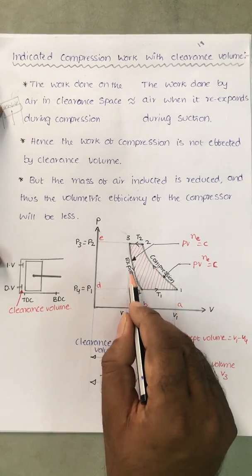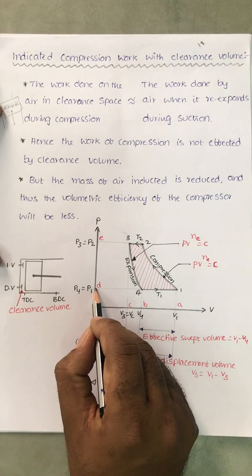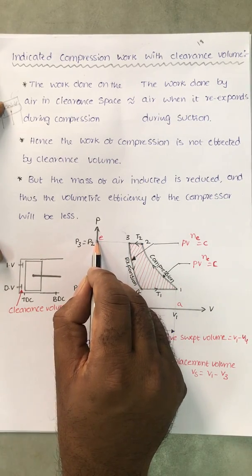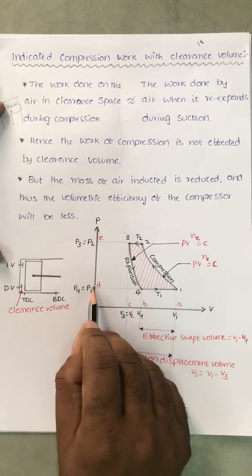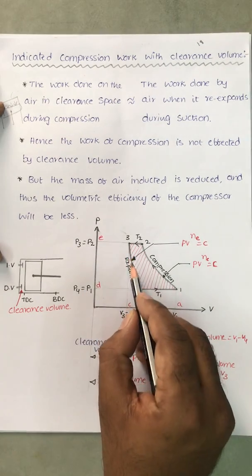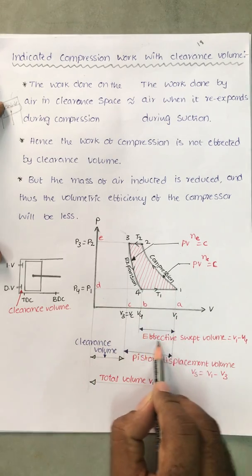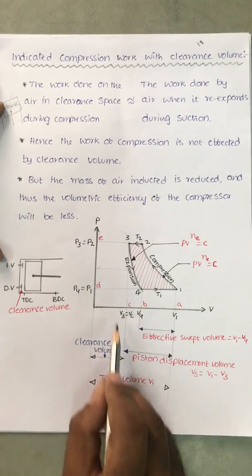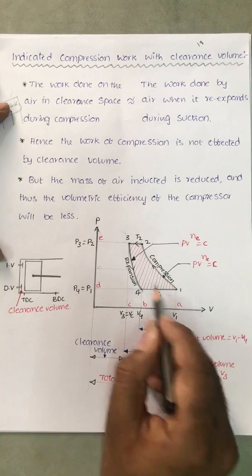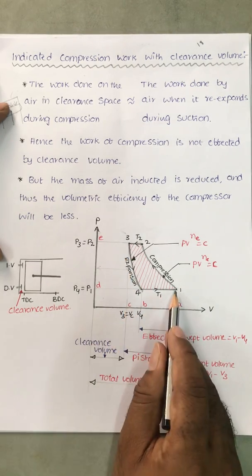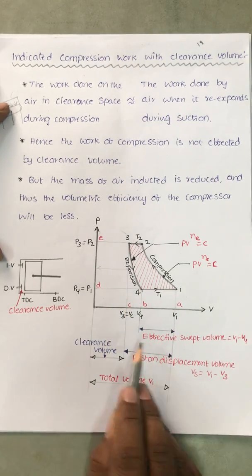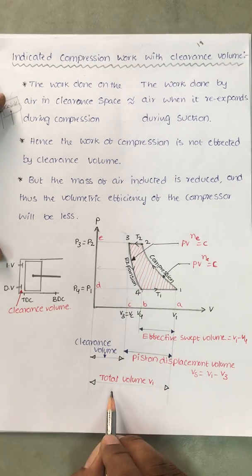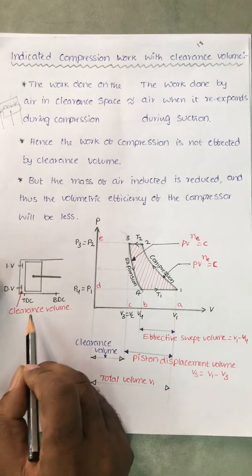If clearance volume is not there, after delivery the pressure suddenly falls and suction begins immediately — that is the diagram without clearance volume. If clearance volume is present, the effective swept volume is V1 minus V4, because the trapped gas must expand first. The piston displacement volume is V1 minus V3, but the effective swept volume is only V1 minus V4, since a portion of the cylinder volume is occupied by re-expanding gas.